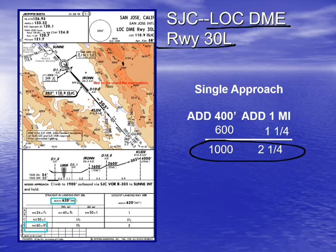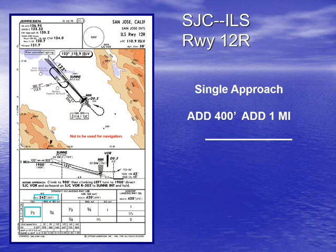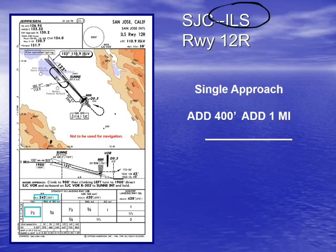You might say that's not very good — that's a pretty high ceiling and pretty high visibility — and you would be right. Let's look at how we can get this alternate minimum lower, because that is a high alternate minimum. Let's look at it in perspective of an ILS, which is going to give us the best alternate minimums typically. Again, we have one approach listed for San Jose. Using our single approach rule, we add 400 feet again and one mile.